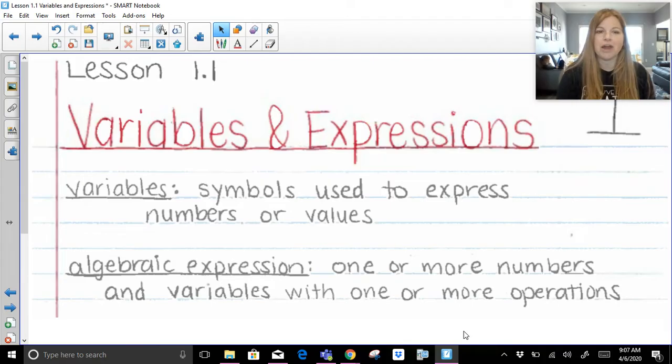First, the definition of a variable is a symbol used to express numbers or values. So a variable can be any letter in the world. It could be A, B, C, D, E, F, G, all the way through Z. And that letter stands for an unknown value, something we don't know. So if I said I wanted to go to the store and buy x apples, x is the number. I just don't know exactly what that number is.